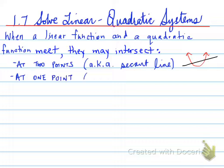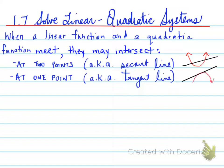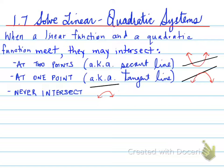It can also meet at one point, known as a tangent line, which touches the parabola at one point. Finally, there is a case where the parabola and the line never intersect at all.